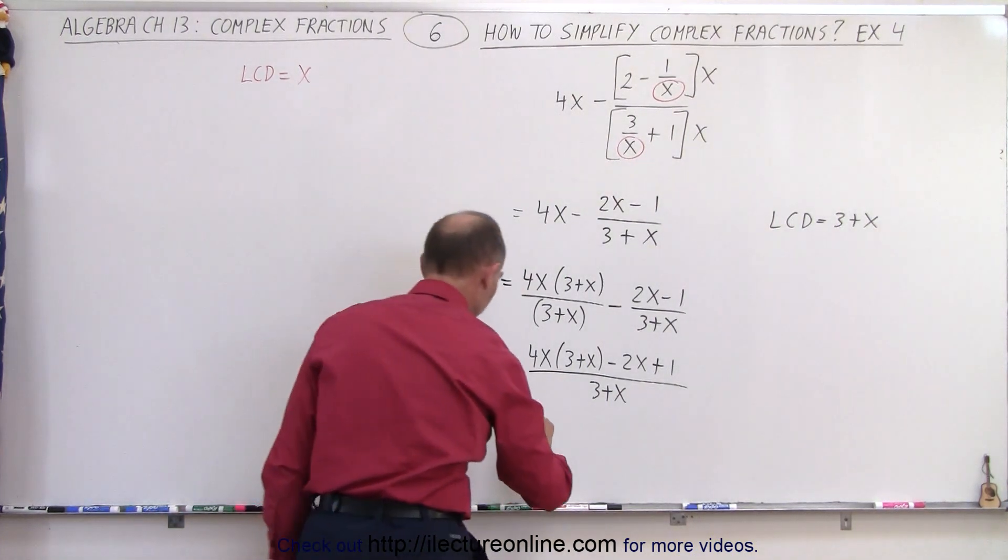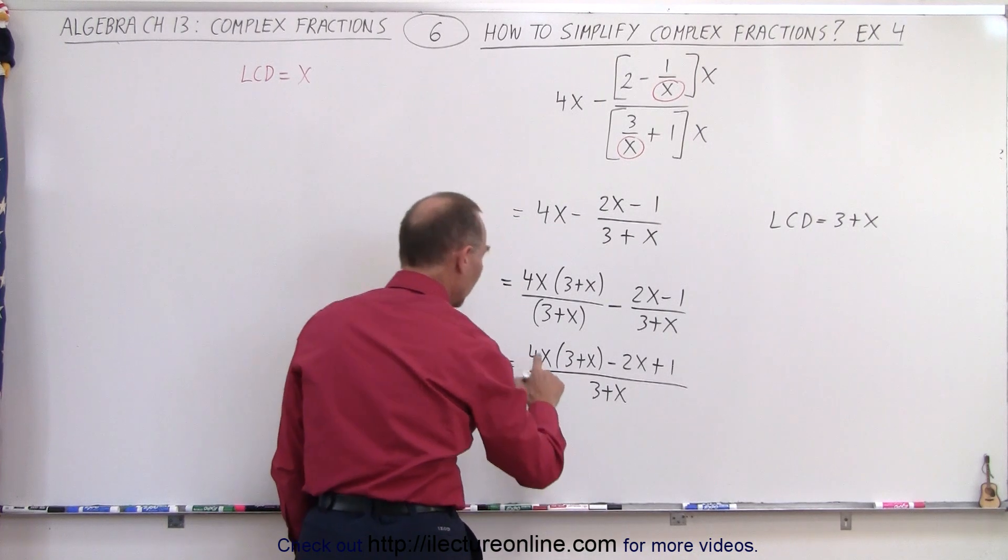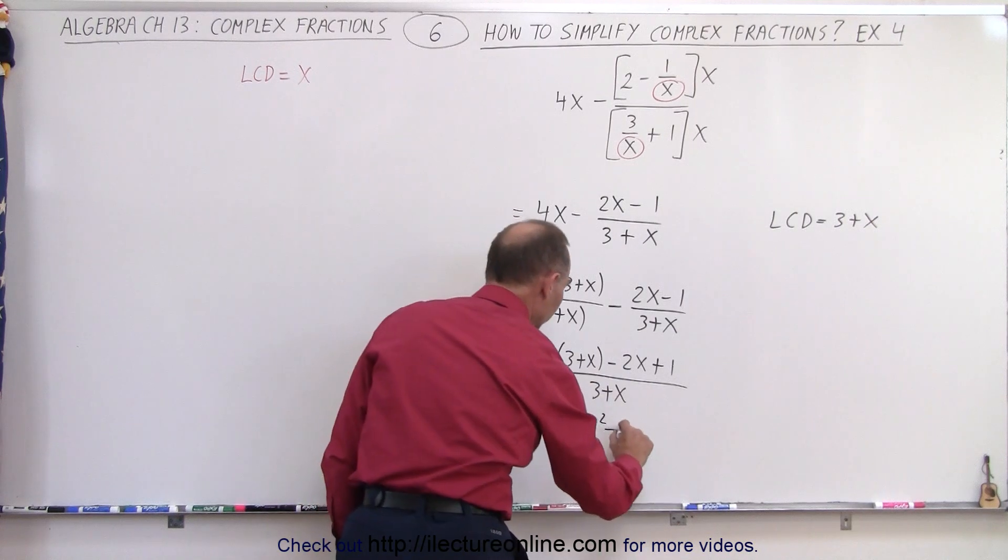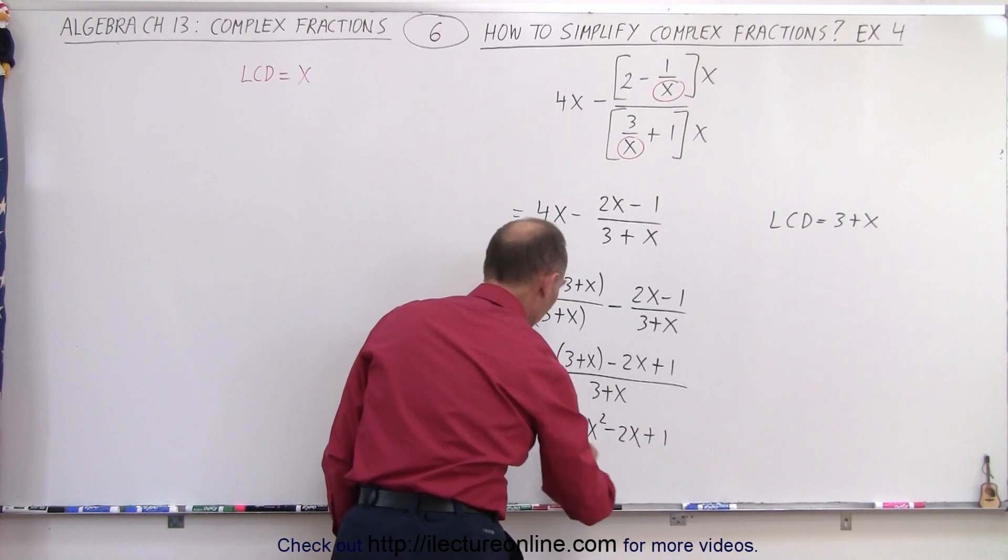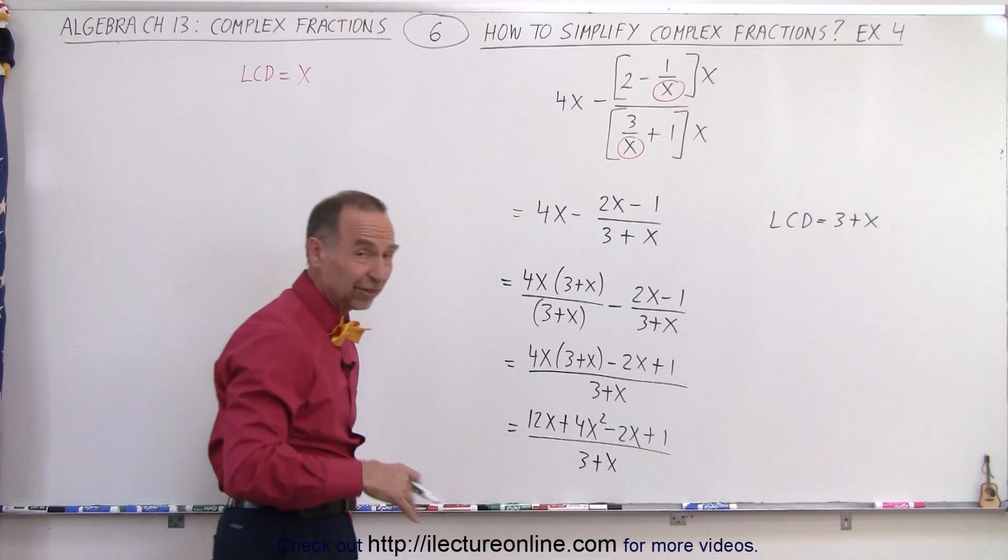So this is 4x times 3, which is 12x. 4x times x, that's plus 4x squared, minus 2x, plus 1, all divided by 3 plus x. Of course, we can write this as x plus 3.